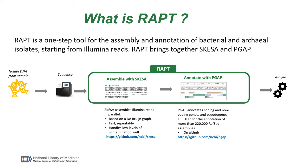PGAP is a very mature pipeline that annotates coding and non-coding genes and pseudogenes. It has been used for the annotation of the more than 220,000 RefSeq assemblies currently available. It is available on GitHub as a standalone package that you can run on your own.